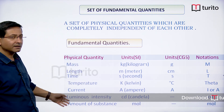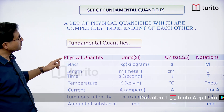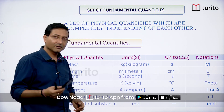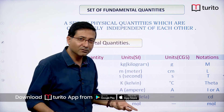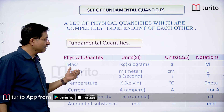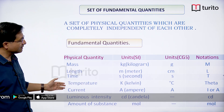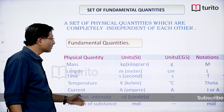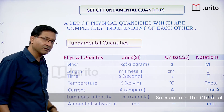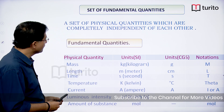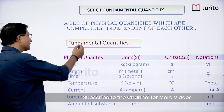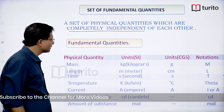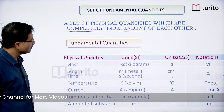There are seven fundamental physical quantities which do not depend on each other. You cannot express mass in terms of length, or length in terms of temperature. Similarly, current, luminous intensity, and amount of substance are all independent of each other, and they are called fundamental physical quantities. The set of physical quantities that are completely independent of each other are called fundamental physical quantities.